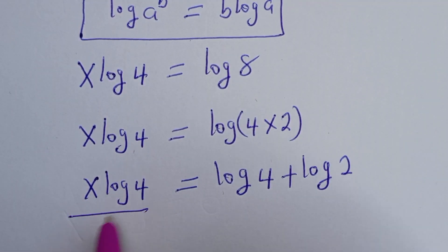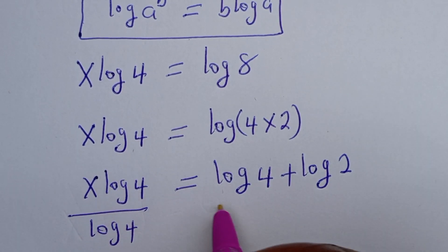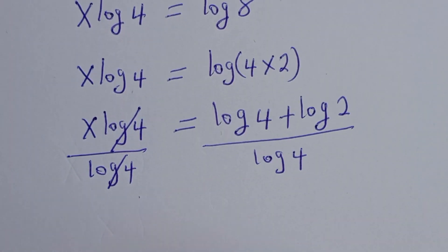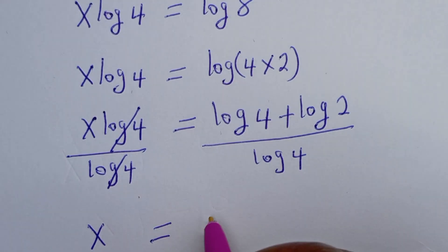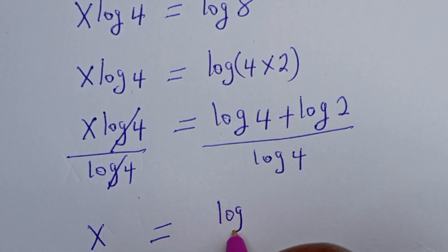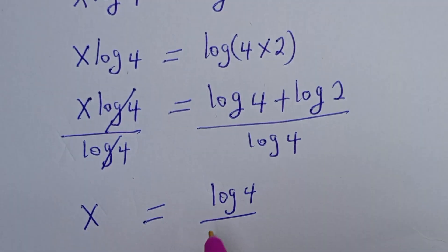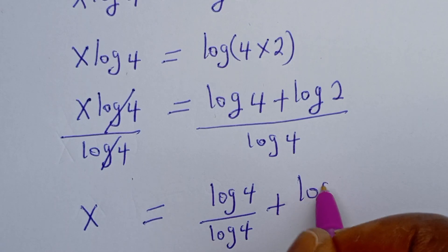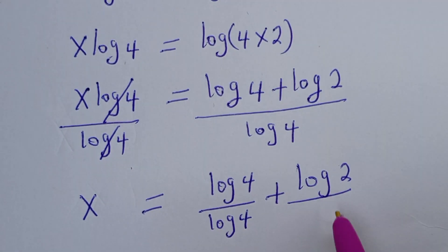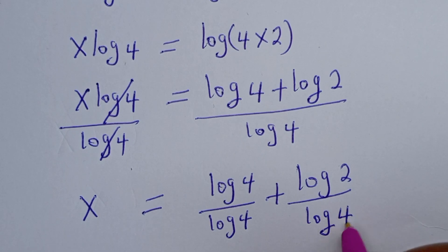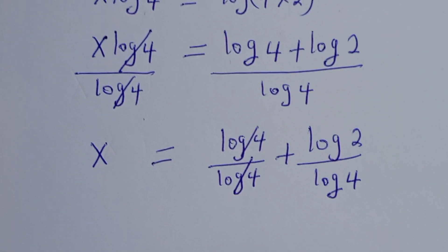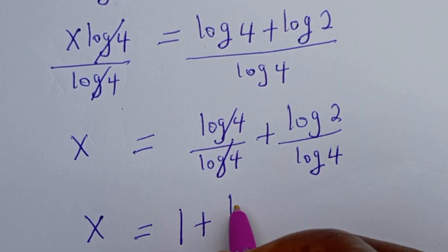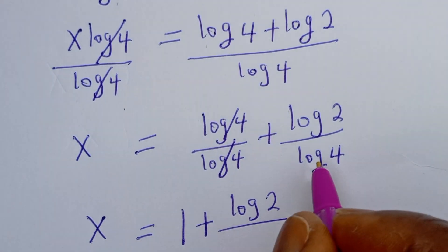So s times log 4 is equal to log 4 plus log 2. Now we can divide both sides by log 4. Dividing gives us: s equals log 4 over log 4 plus log 2 over log 4.